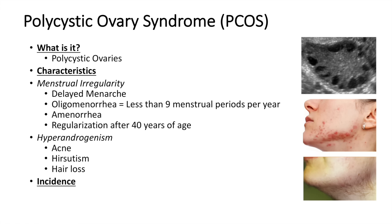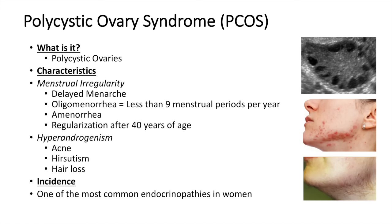Now, what is the incidence of this syndrome? Well, the incidence is quite alarming. It's actually one of the most common endocrinopathies in women, and typically about 6.5 to 8% of women are affected with this syndrome.